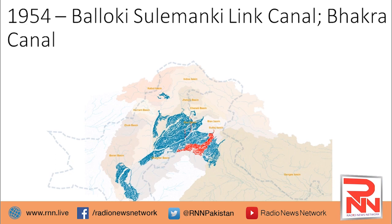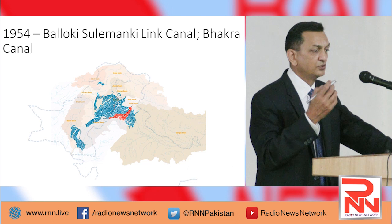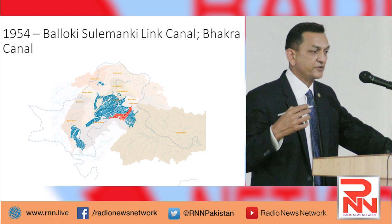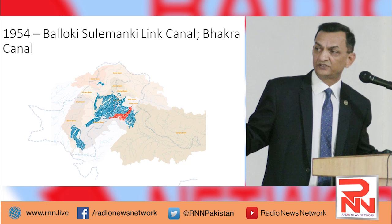In 1954, Pakistan built Balai Ki and Suleiman Ki Dink Canal to divert some water from Ravi River into Satlaj River. At the same time, India built the Rajasthan Canal — a very big canal. After the Satlaj Canal, India built the Rajasthan Canal, stopping Pakistan's water while diverting its own waters and building more canal systems.